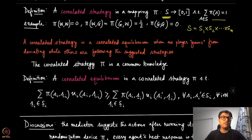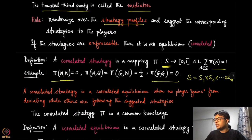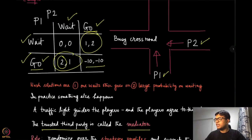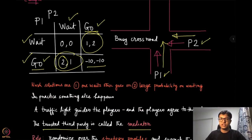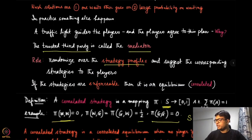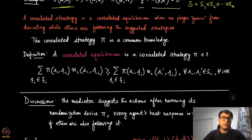For example, in the wait-go game, we can set the probability on wait-wait and go-go to 0, and put probability one-half each on wait-go and go-wait. This means half the time one street's cars are asked to move, and the other half the other street's cars move. That is a valid correlated strategy.